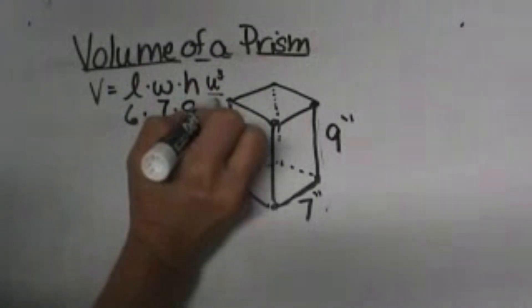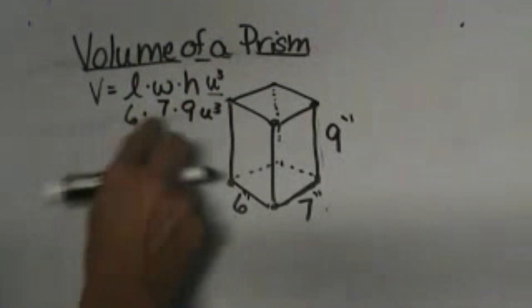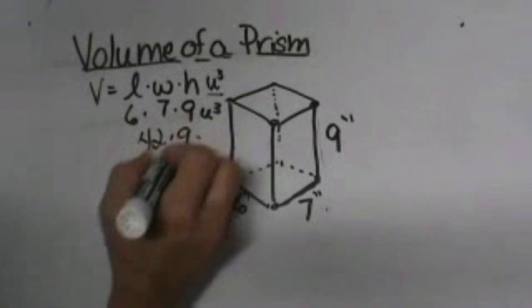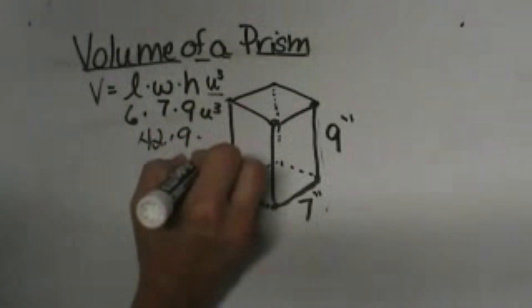That would always be units cubed because it's three-dimensional. 6 times 7 is 42, and 42 times 9 is 378 units cubed.